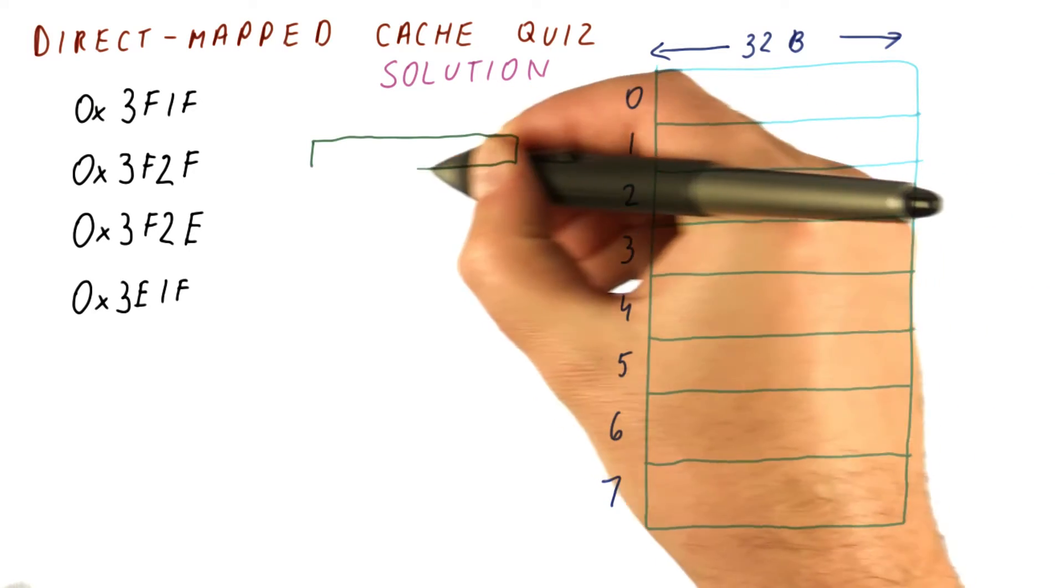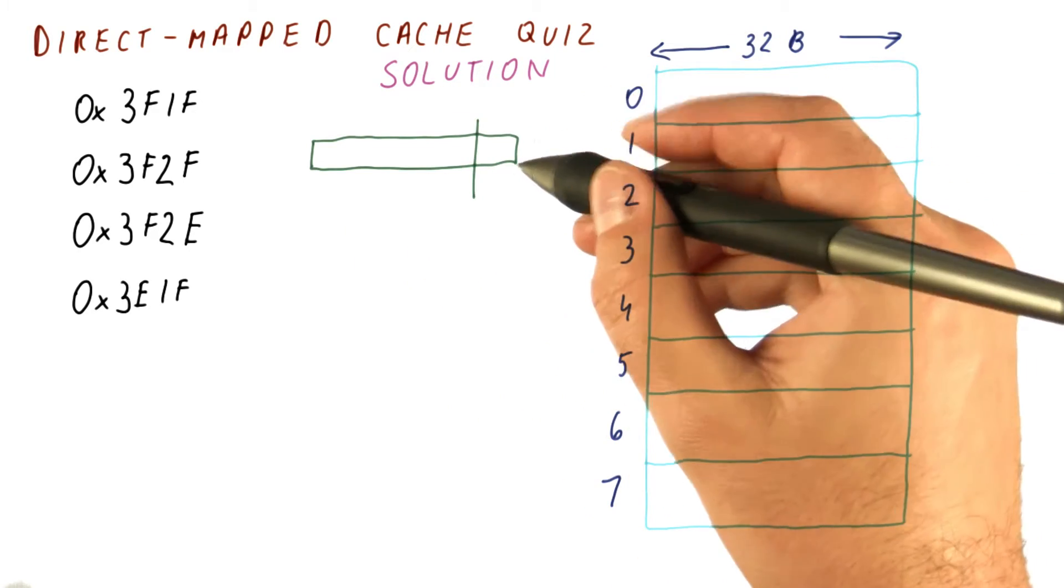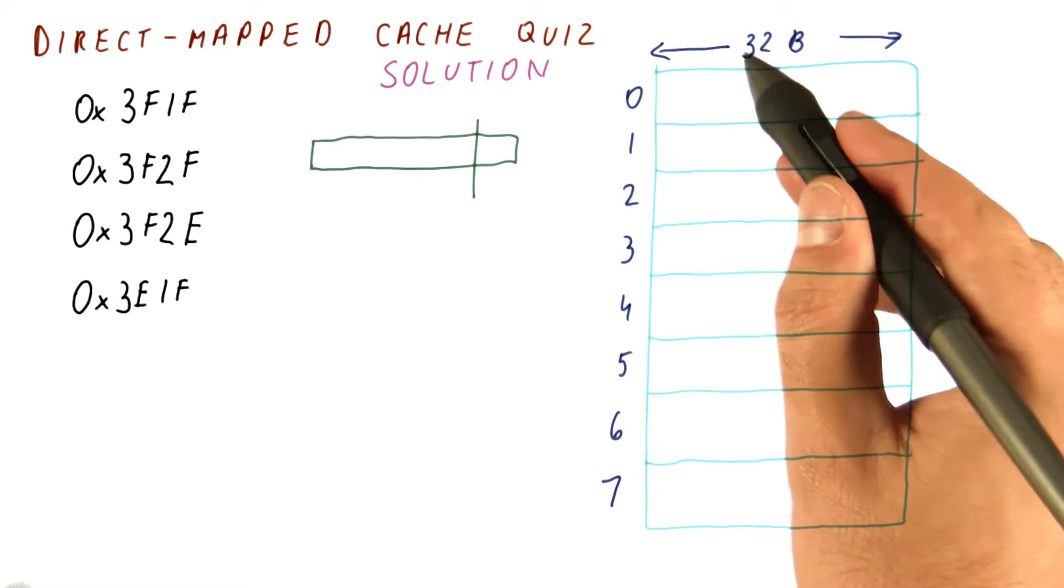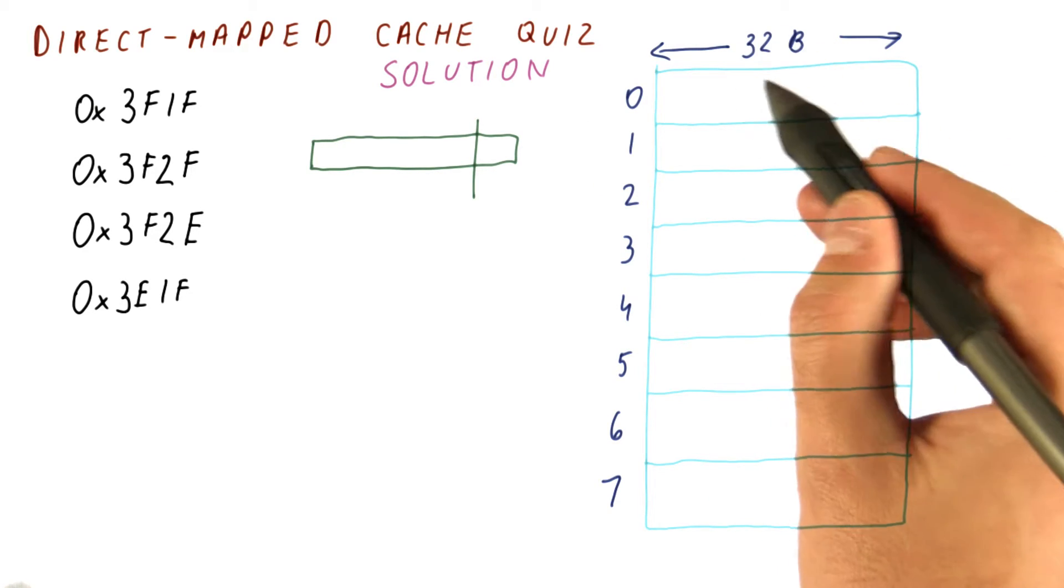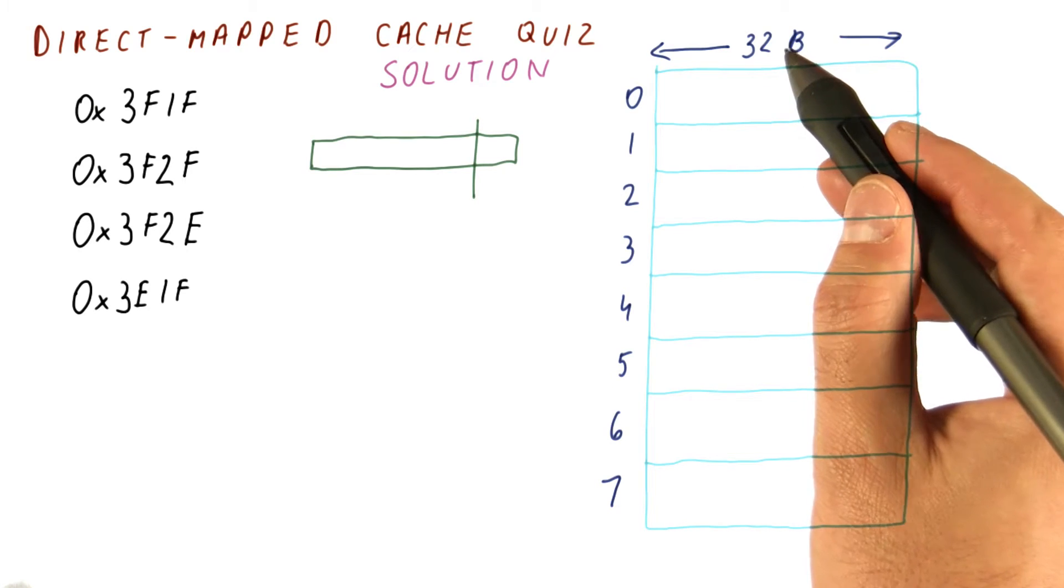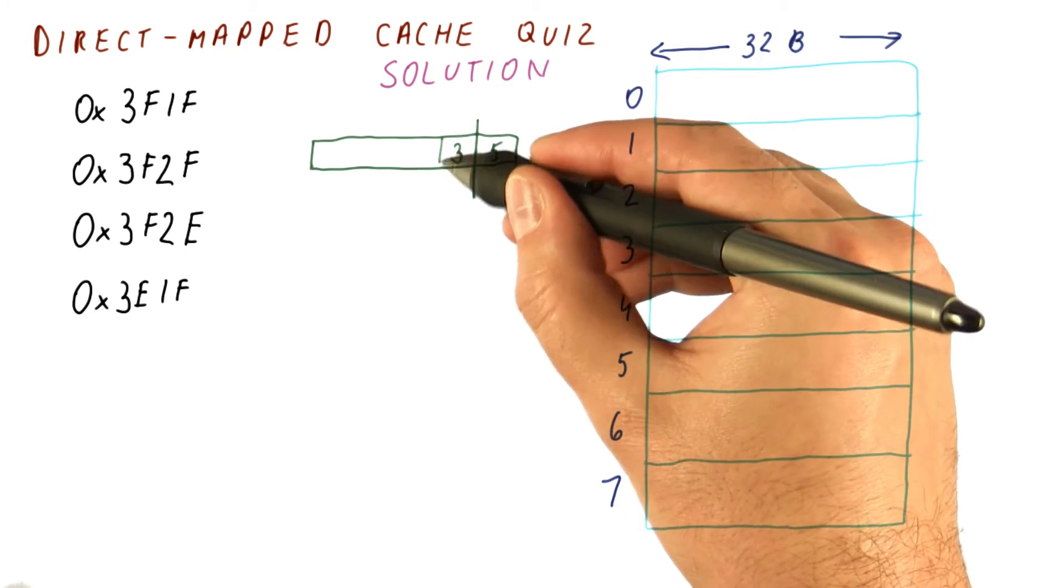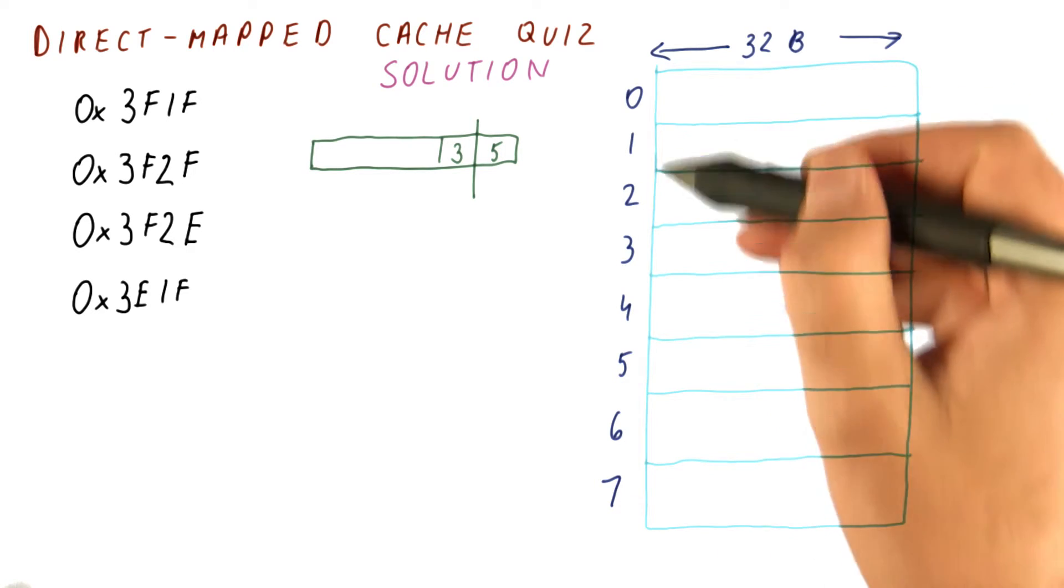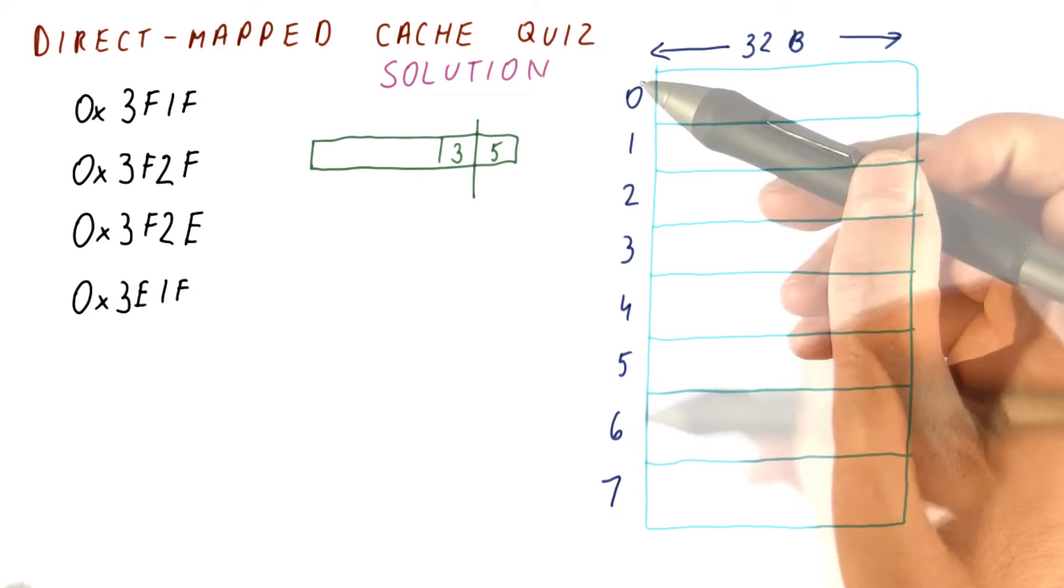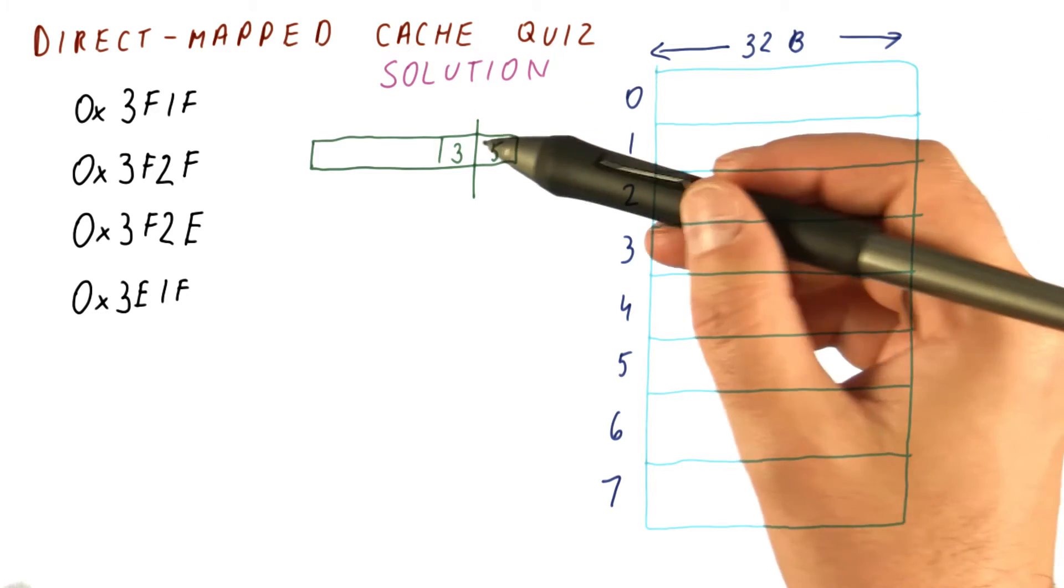So the address breakdown will be: the offset bits will be five, because we need five bits to tell us which of the 32 bytes we are talking about. The index bits will be three, because we need three bits to tell us which of the eight slots in the cache to use. And the remaining bits are going to be the tag.